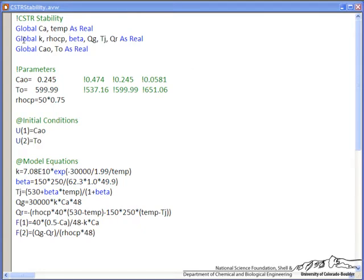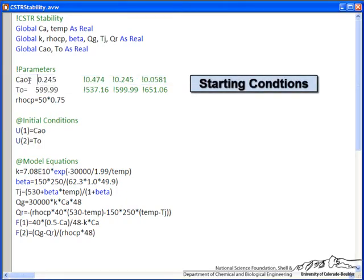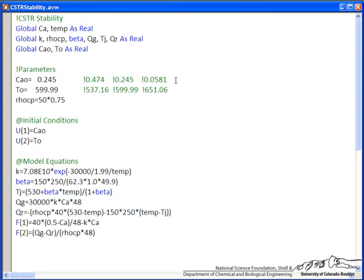So I've already presented the Athena code and let me just indicate some of the information and then I'll show you some solutions. So first, these are our starting conditions in the reactor, initial concentration and temperature, and we'll be changing those.